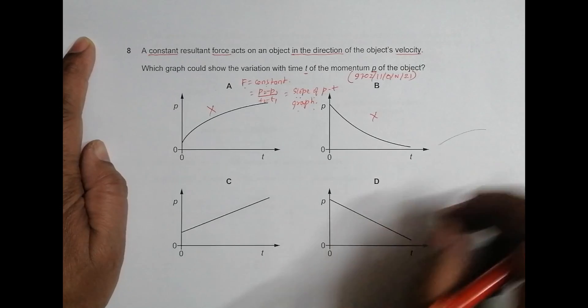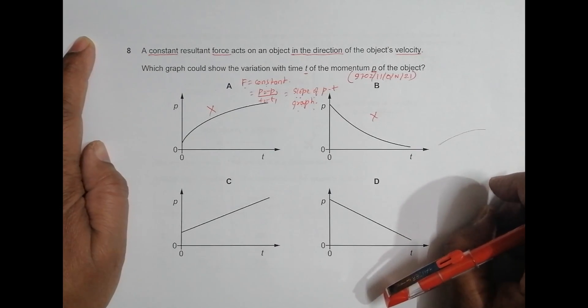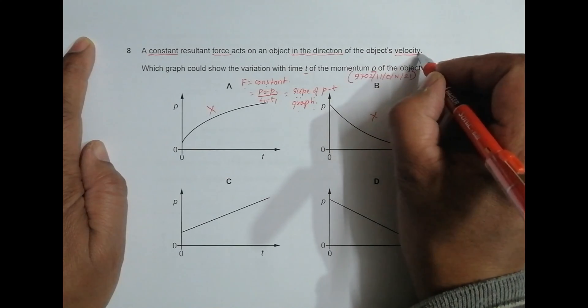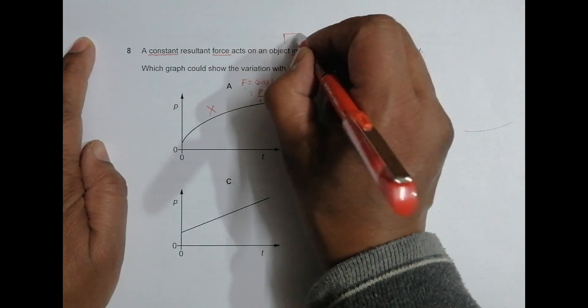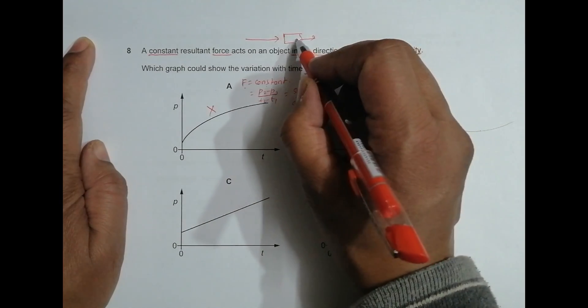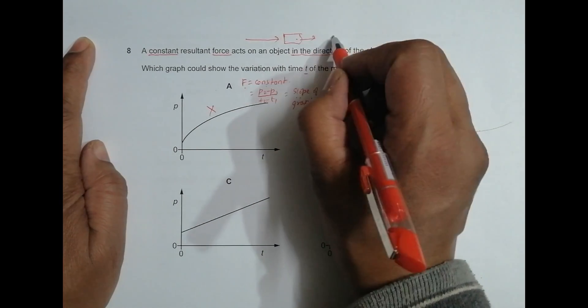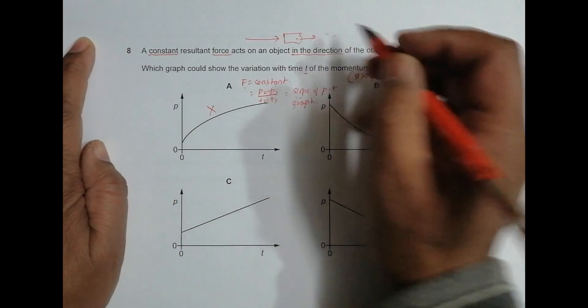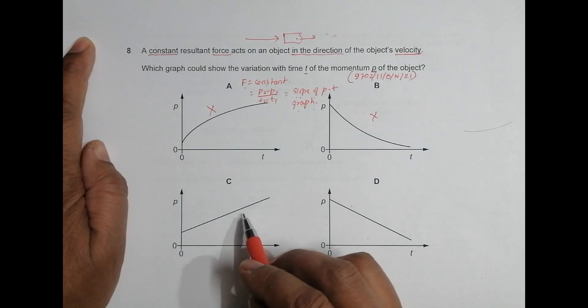The other is the force acts in the direction of the object's velocity. So the object is moving like this and force also applies like this. It means that the velocity increases, which means the momentum will increase. So among these two graphs, the increase of momentum is shown in...